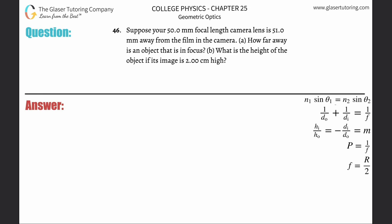Number 46: Suppose your 50 millimeter focal length camera lens is 51 millimeters away from the film in the camera. Letter a, how far away is an object that is in focus? They're giving us focal length and the image distance because the image is projected onto the film.